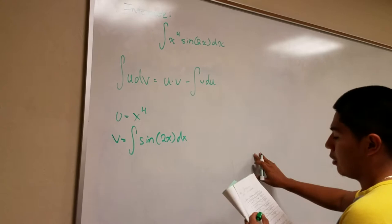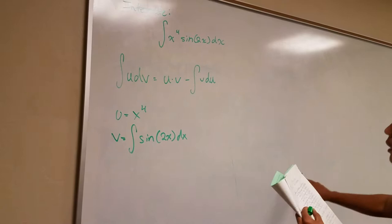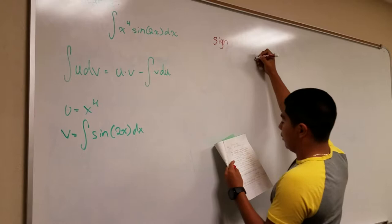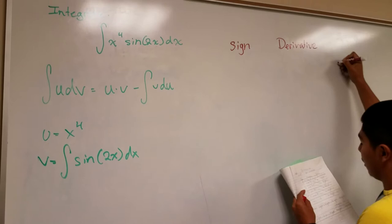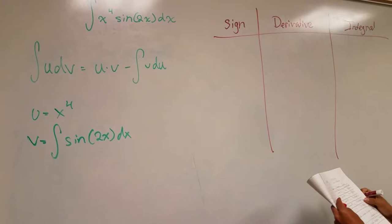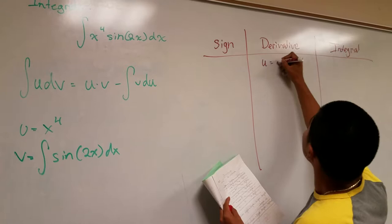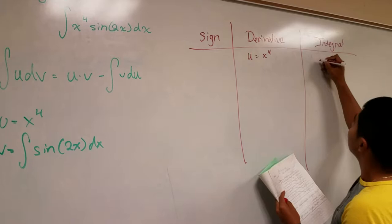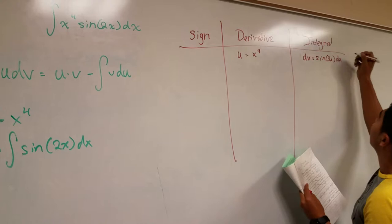With that being said, we can use the tabular method, so I'll set up a table. We put sine on one side, and we're going to do the derivative column and the integral column. Our u is going to equal x to the fourth, and our integral column is going to become dv.